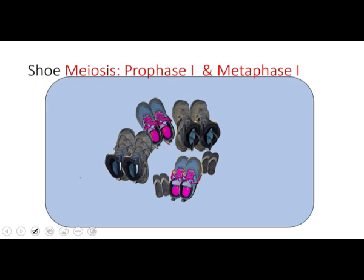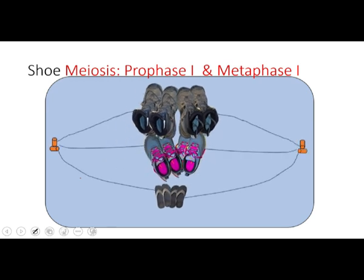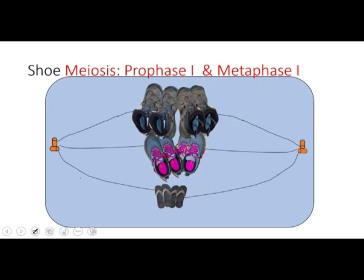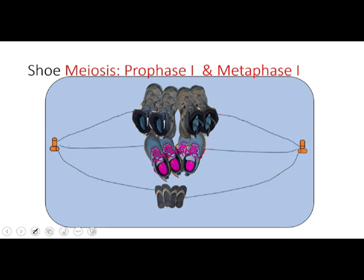Let's go back to our shoe meiosis analogy and look at what this would look like. We start off normal, push everything to the middle. This is metaphase one, where homologous pairs are lined up. All of these microtubules are supposed to be attached to each of the members of homologous chromosomes, and if so, they pull apart evenly.